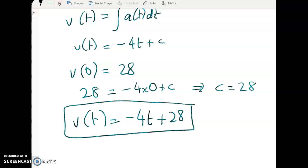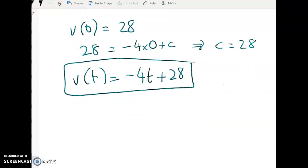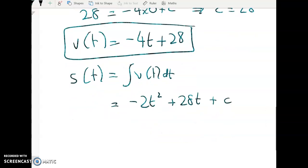So you can see that we're getting closer. I'm going to anti-differentiate that now to get back to S of T. So S of T is this, and in this case, that gives me negative 2T squared plus 28T plus a different C, a different constant of integration.